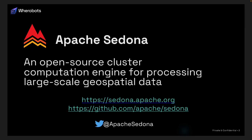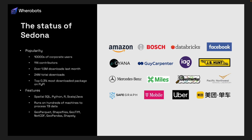Apache Sedona is an open source cluster computation engine for processing large-scale geospatial data. It's on GitHub, and we also have our website sedona.apache.org and Twitter. In terms of popularity, Sedona has over 10,000 corporate users, over 114 contributors on GitHub, received over 1.5 million downloads last month, and its overall downloads have exceeded 24 million. It is ranked among the top 0.3% most downloaded packages on PyPI.